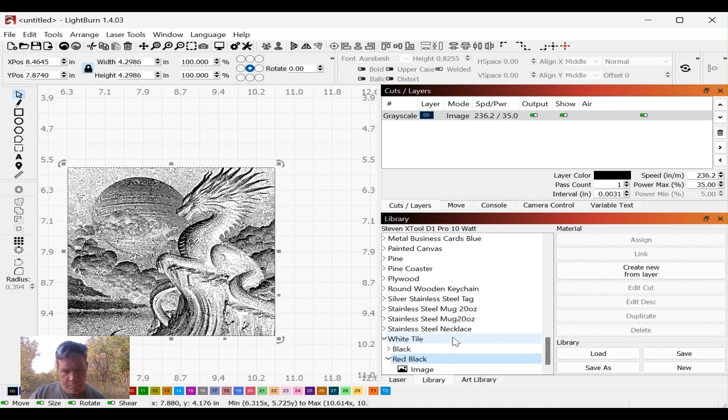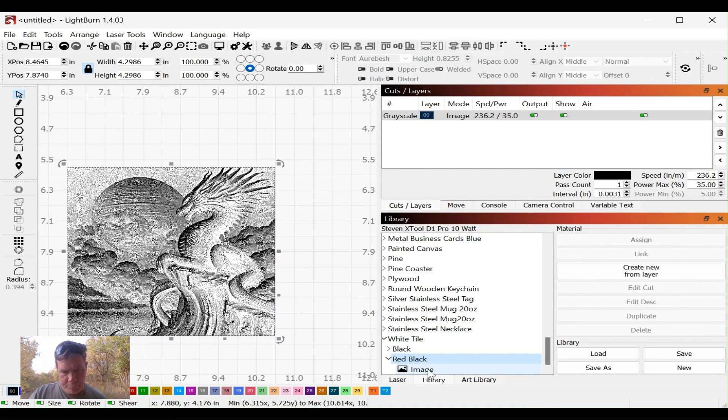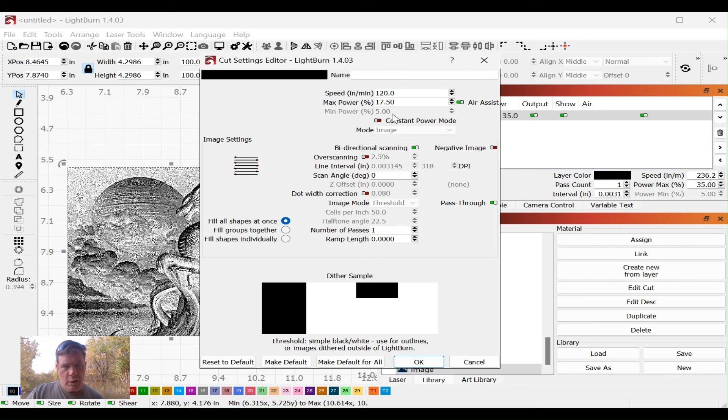I'm going to go with the red black, but we're going to edit that some. So we know we're going to do this at 120. Now I do set up for inches per minute. If you're using millimeters per second or millimeters per minute, remember you're going to have to edit that. All you have to do is punch that into Google, convert 120 inches per minute to millimeters per minute, it'll spit out your number.